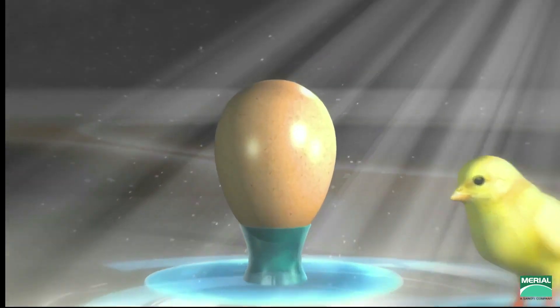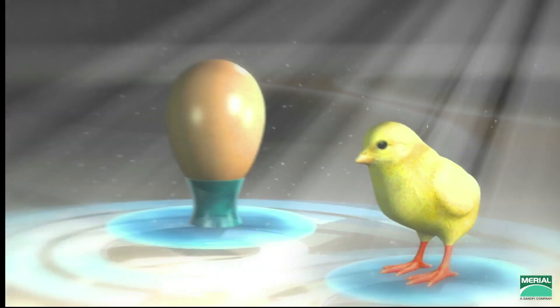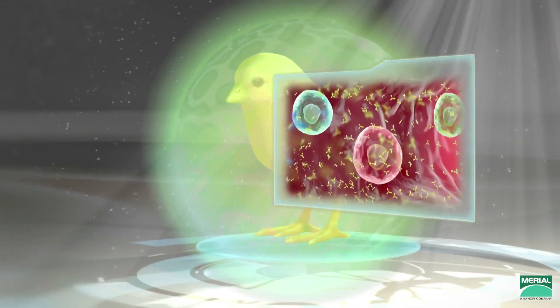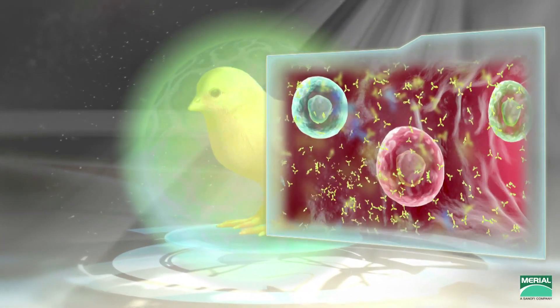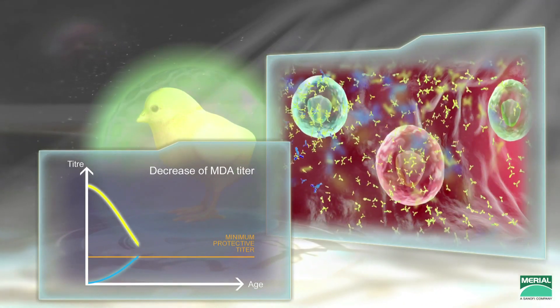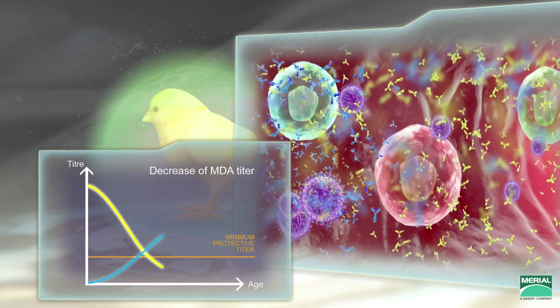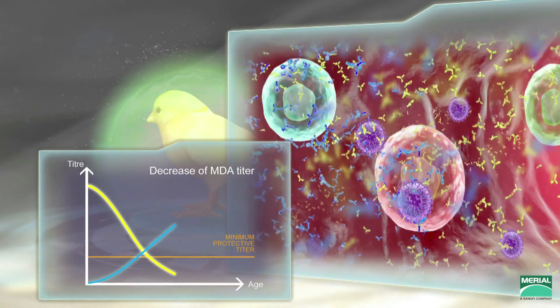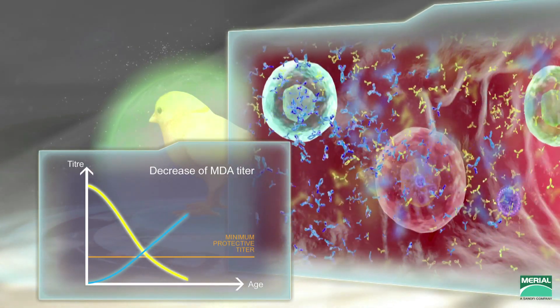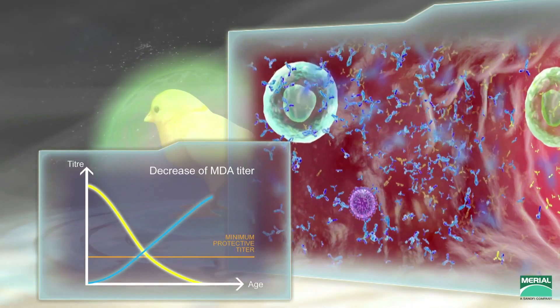Vaxxitek is also administered at the hatchery, either in ovo or subcutaneously. The HVT vector infects and replicates in the host cells. During replication, the IBDV-VP2 protein is produced in the cytoplasm of infected cells. The IBD maternal antibodies have no effect on HVT replication and on VP2 expression.